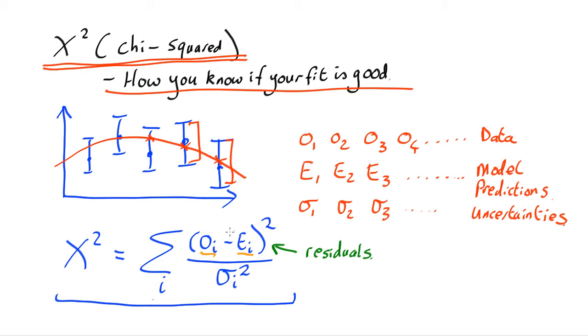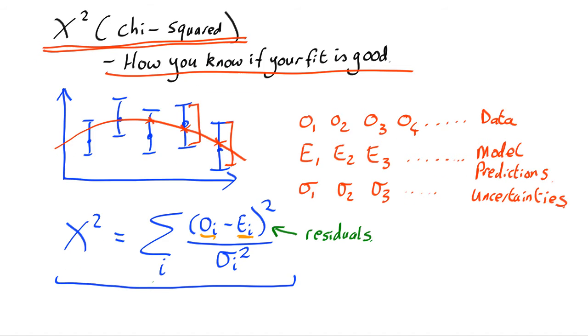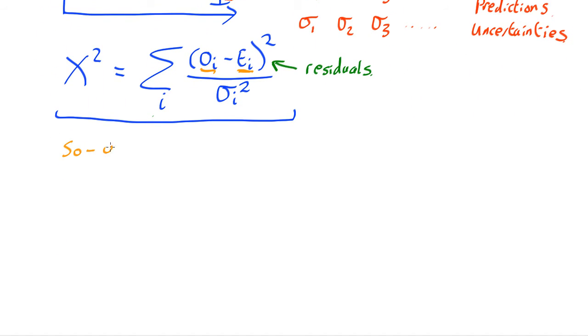If you'd come up with a really bad model the observed values and the estimated values will be very different from each other so chi-squared would be large. So you want chi-squared to be as low as possible for the best fit.